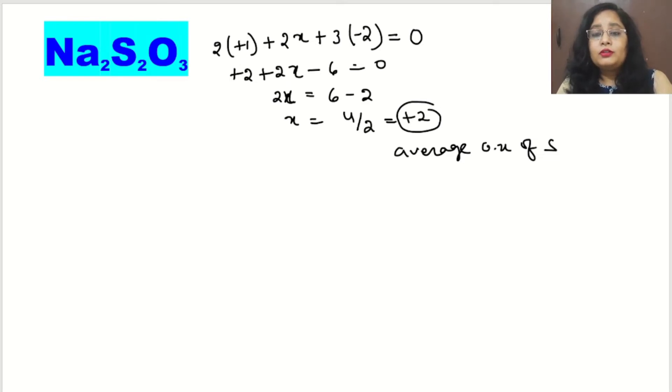We will draw the structure first and then calculate the oxidation state accordingly. So first of all, we will draw the structure. It will be Na-O-S-O-Na with another O, and one coordinate bond between sulfur and sulfur. So this is the structure of Na2S2O3.